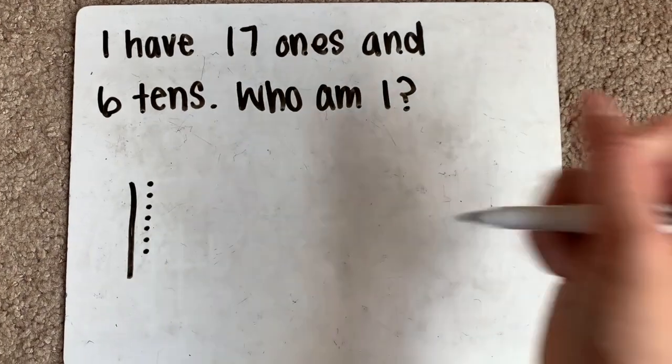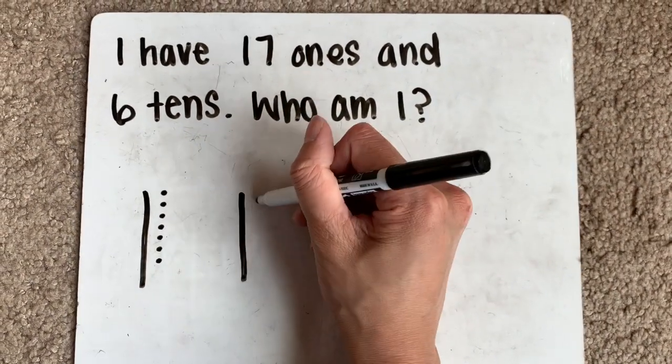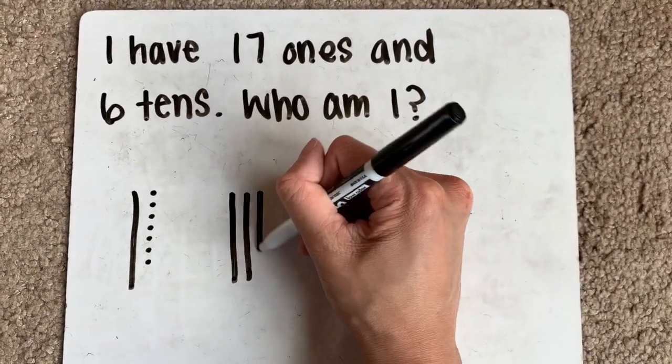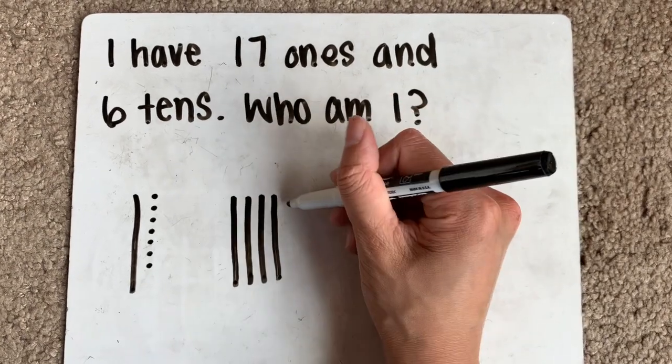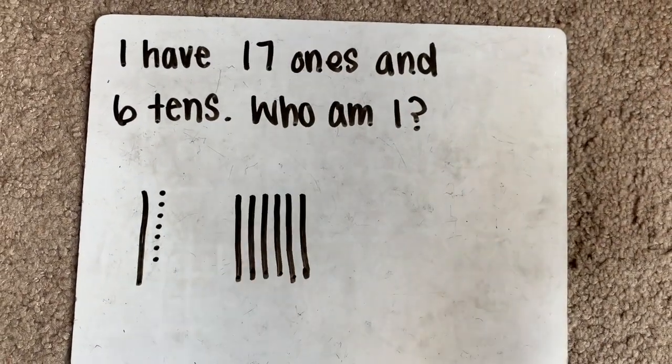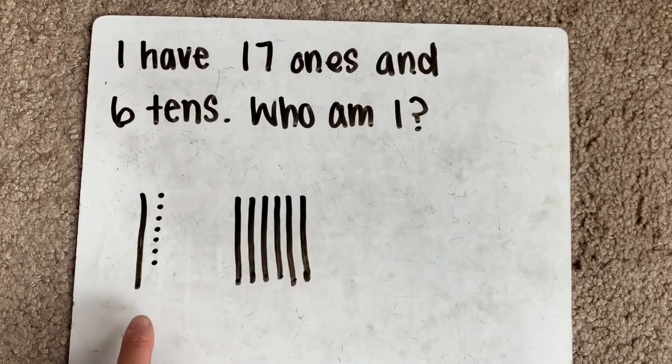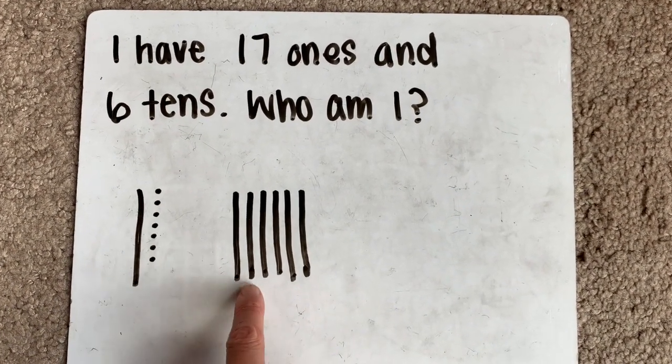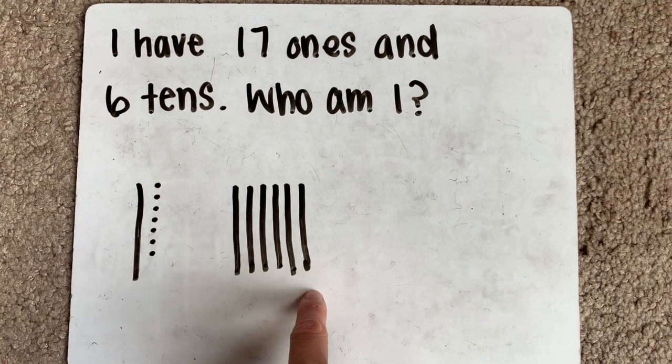And 6 tens. 1, 2, 3, 4, 5, 6 tens. So let's see how many tens we have all together. 1, 2, 3, 4, 5, 6, 7.